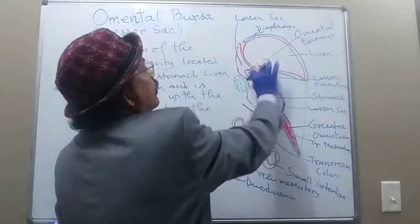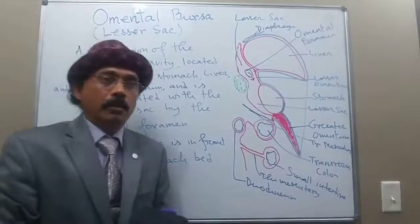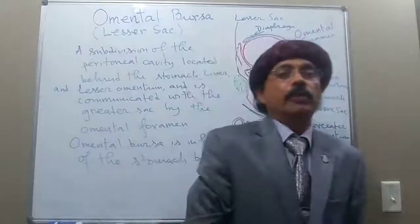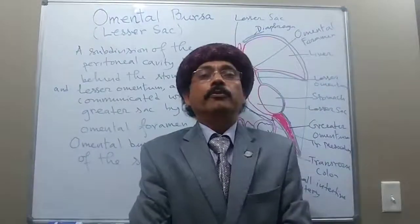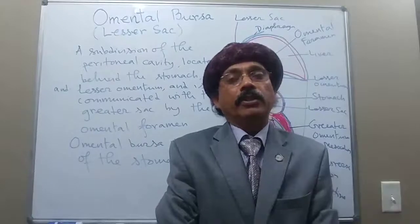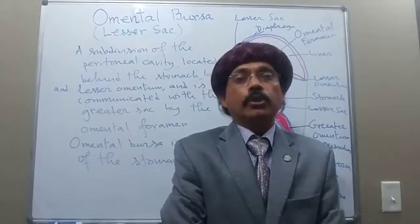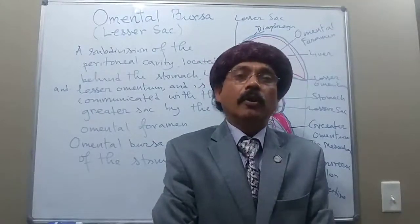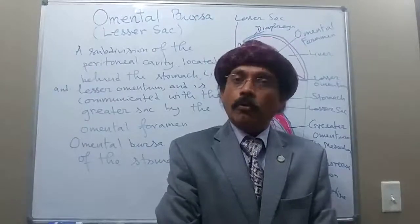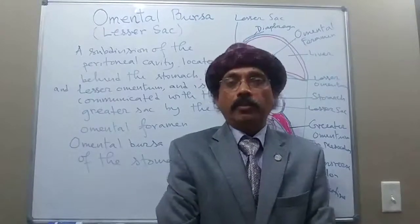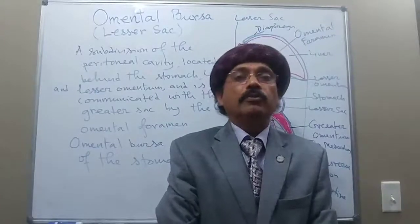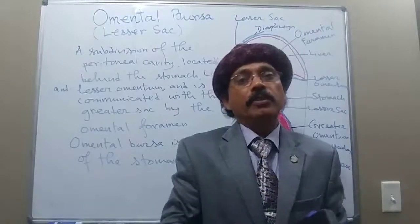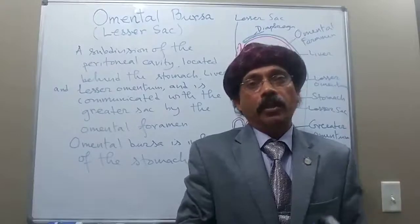So this is the lesser sac or omental bursa. How does it develop? What is its embryological origin? It develops due to expansion of the dorsal mesentery, rotation of the stomach, dilatation and enlargement of the spleen, clockwise rotation of the stomach, and enlargement of the liver.